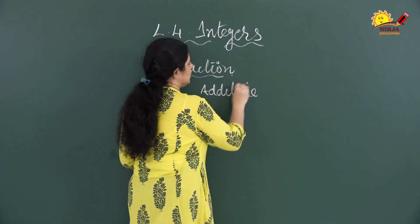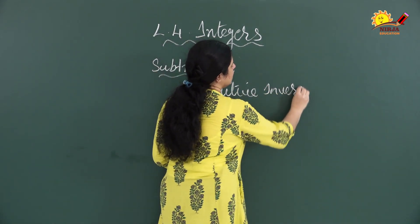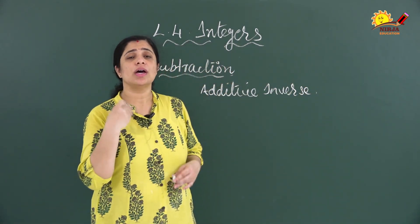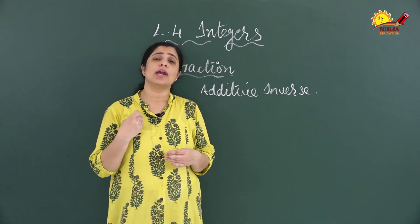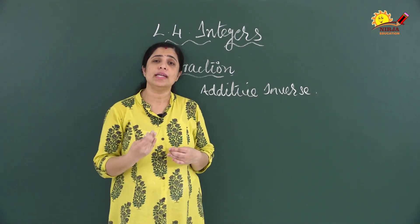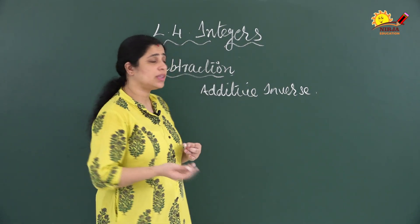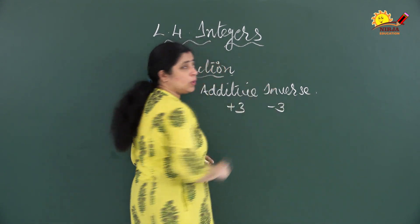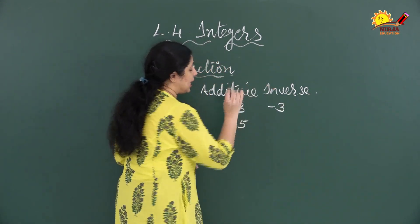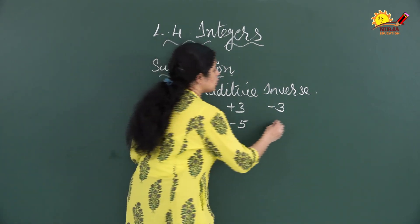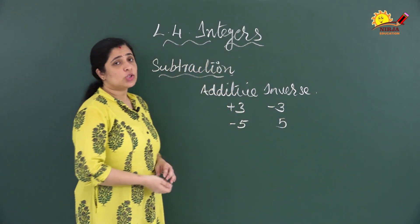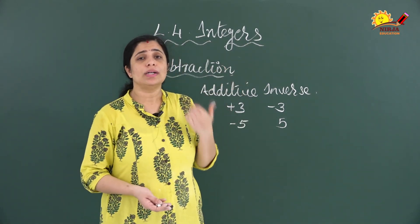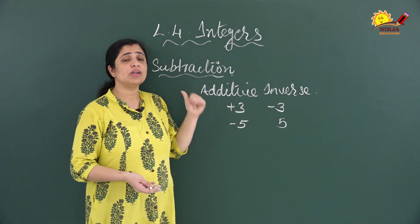What do we mean by additive inverse? Additive inverse means changing the sign — positive becomes negative, or negative becomes positive. For example, the additive inverse of positive 3 is negative 3. What is the additive inverse of minus 5? It is plus 5. You should know what additive inverse means in order to do subtraction.